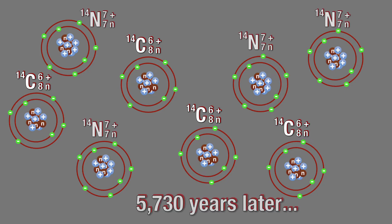Carbon-14 has a half-life of 5,730 years, meaning that if there are 500 atoms of carbon-14 in a substance today, in 5,730 years, there will be 250 atoms of carbon-14 and 250 atoms of nitrogen-14.